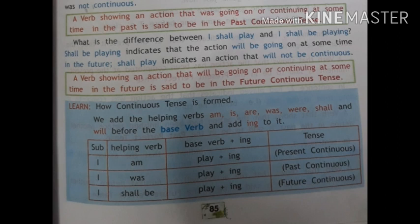Now we see the difference between 'I shall play' and 'I shall be playing.' 'Shall be playing' indicates the action will be going on at some time in the future. 'Shall play' indicates an action that will not be continuous. When the action will continue in the future, we use the future continuous tense. A verb showing an action going on or continuing at some time in the future is said to be in the future continuous tense.